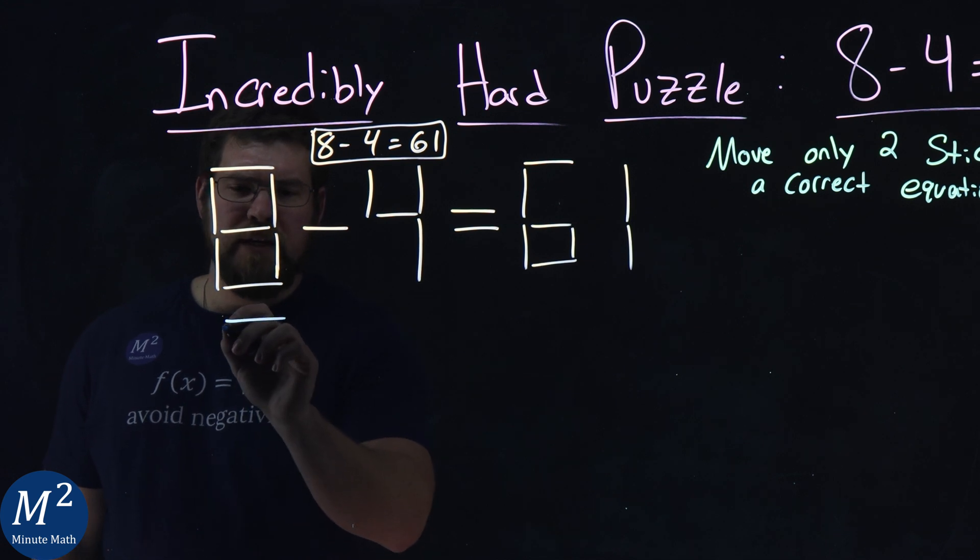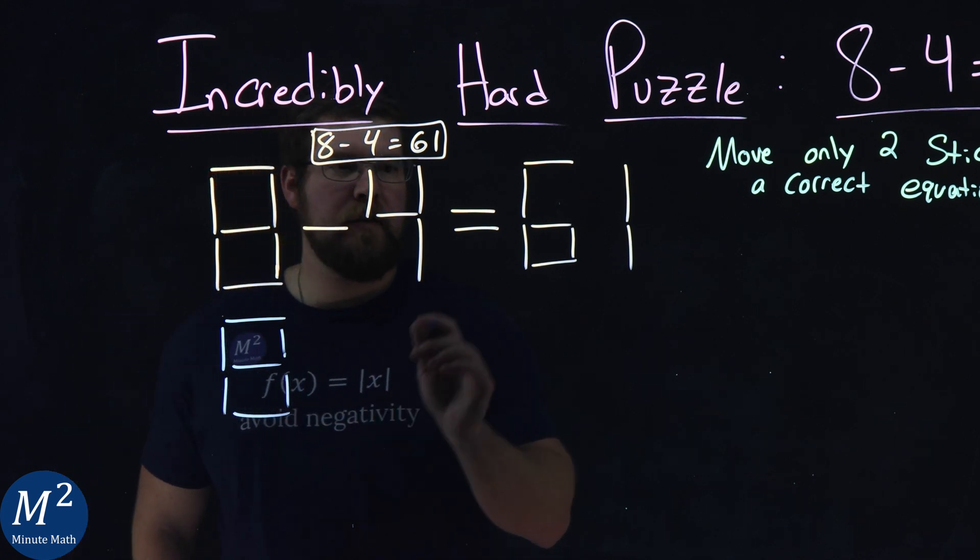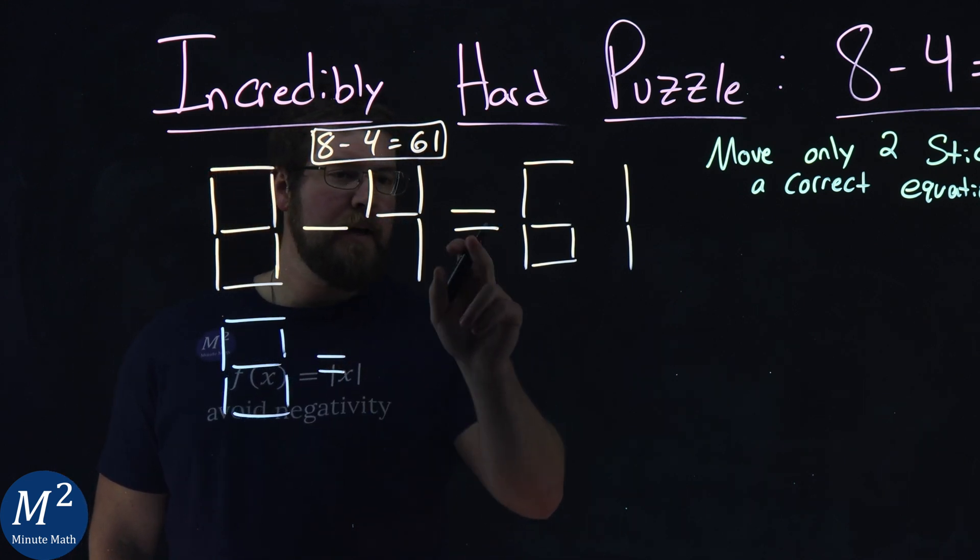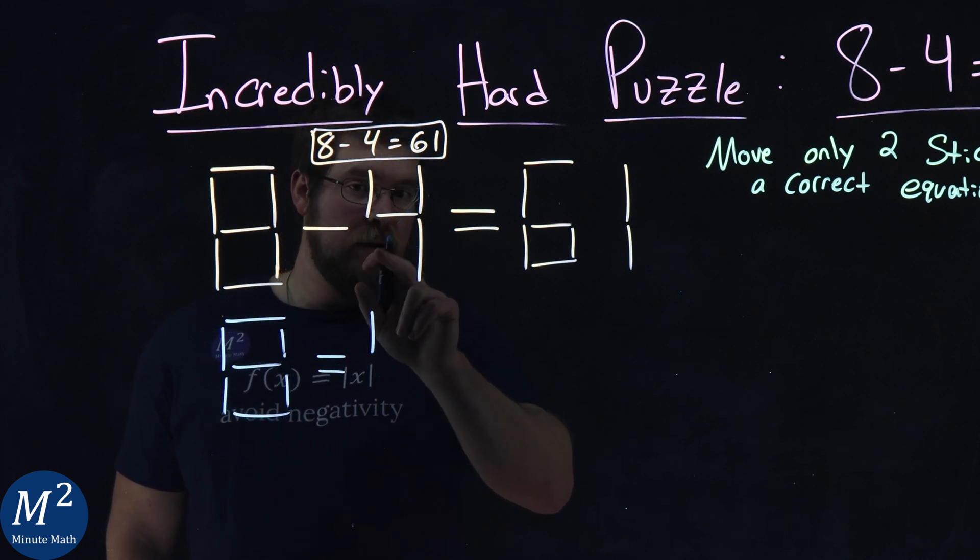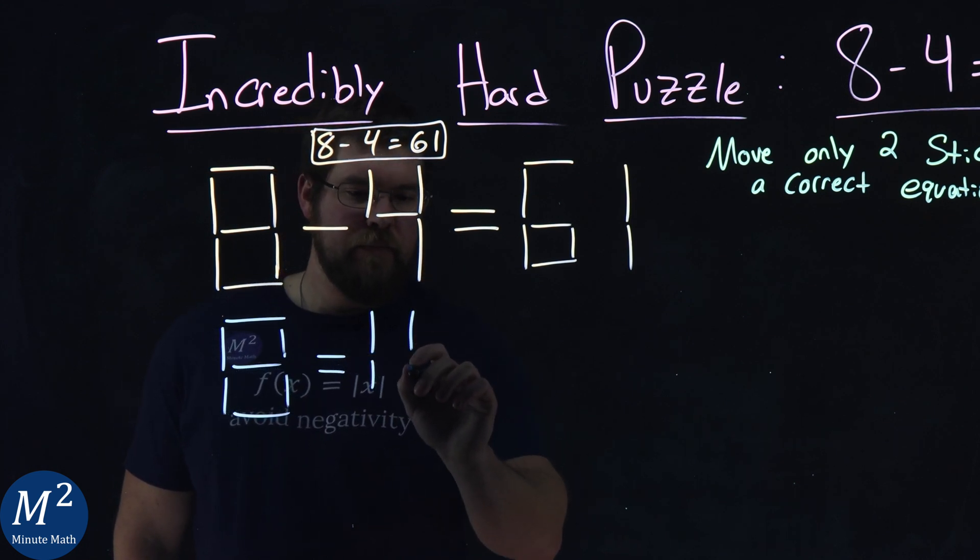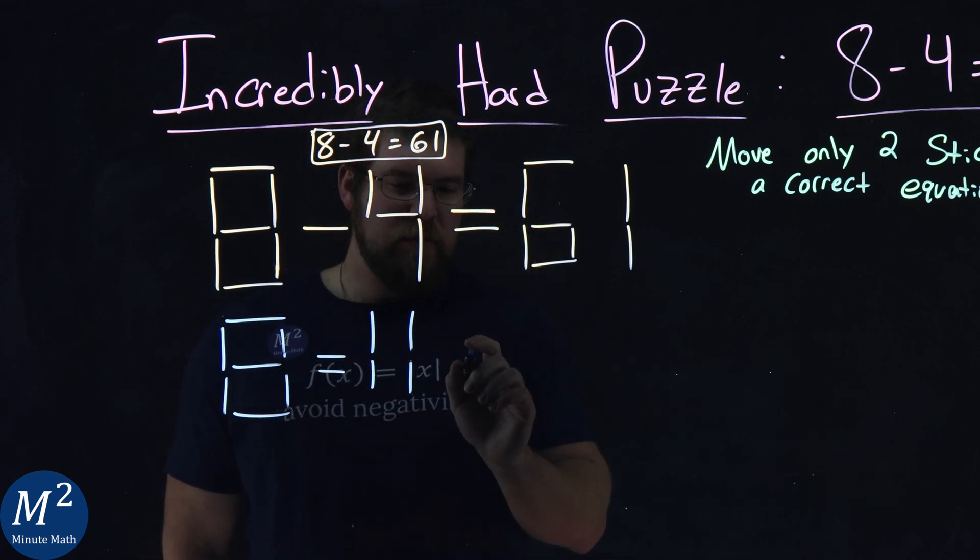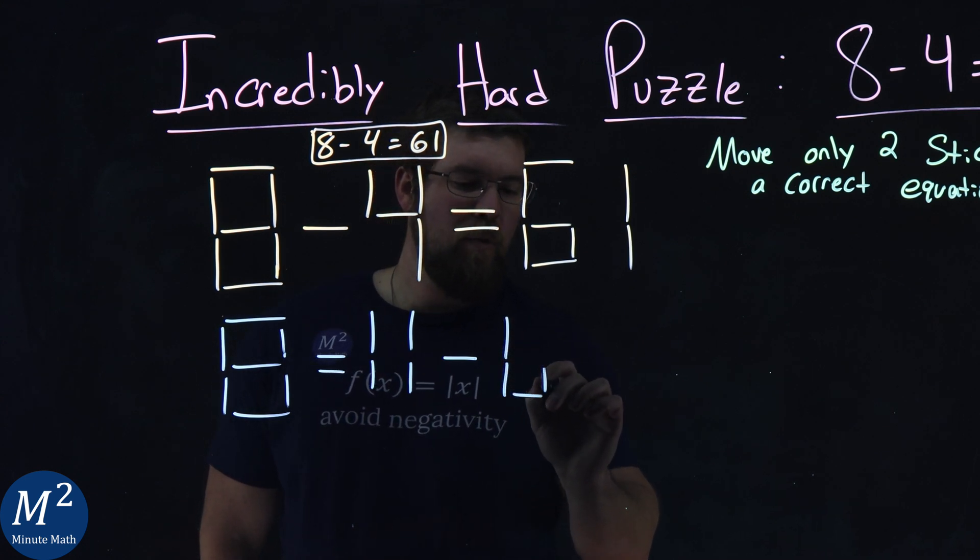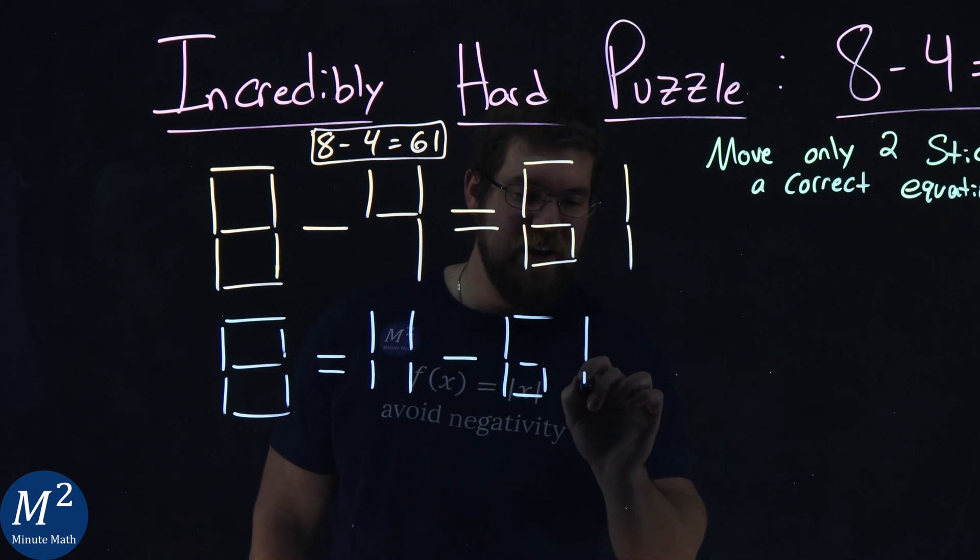We have the 8 stays the same here. It's always hard to write with the sticks. Equal sign gets moved over right here, so you have two sticks here now. This one brought over here. And then the 4 becomes the 11, bringing this inside one down. One stick from the equal sign is left over. We have a minus, and we still have a 61 here. Oh my goodness.